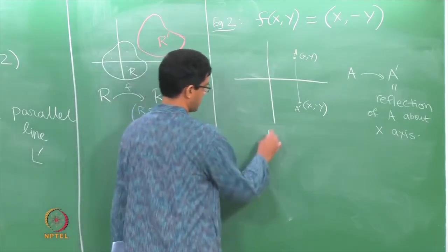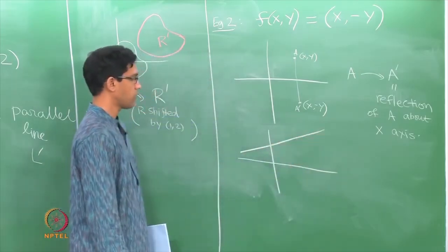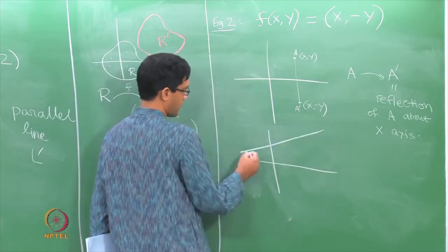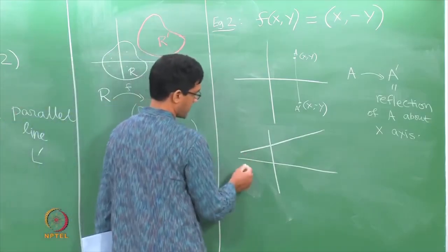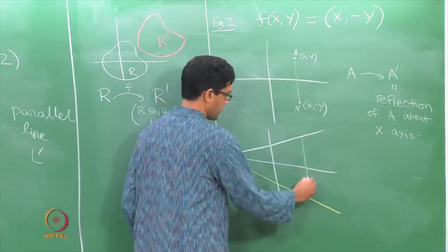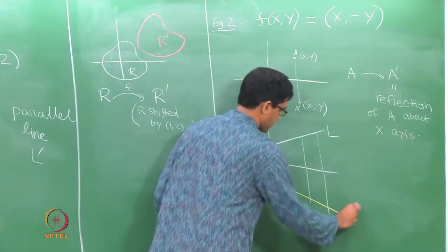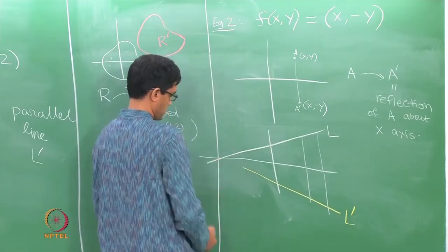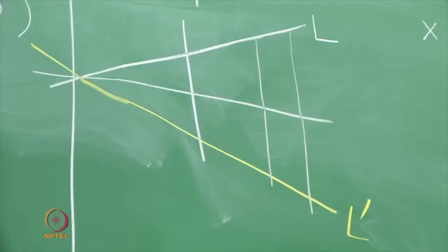This map f is very easy to describe — it just performs a simple reflection about the x-axis. Similarly, if I have a one-dimensional subset such as a line in R² and I want to know how this function transforms it, I just see what it does to each point of the line. It reflects each point about the x-axis, giving me the reflected line. So line L maps to line L′, and these lines will intersect somewhere on the x-axis.